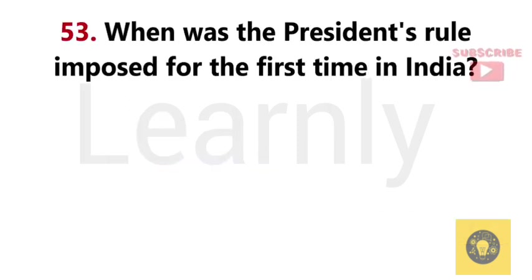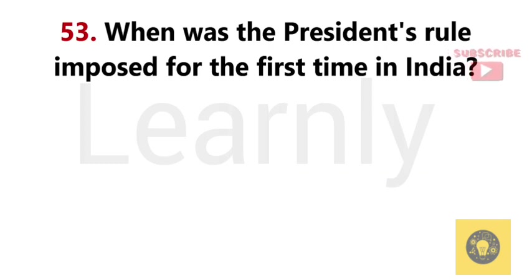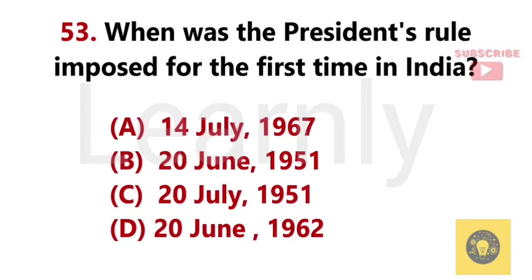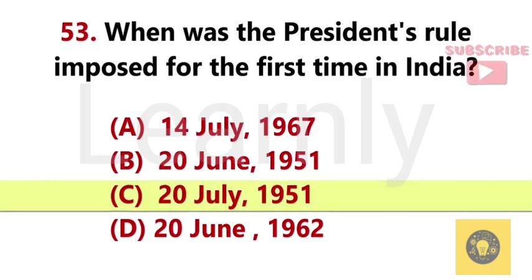When was the President's Rule imposed for the first time in India? Answer C. 20th July, 1951.